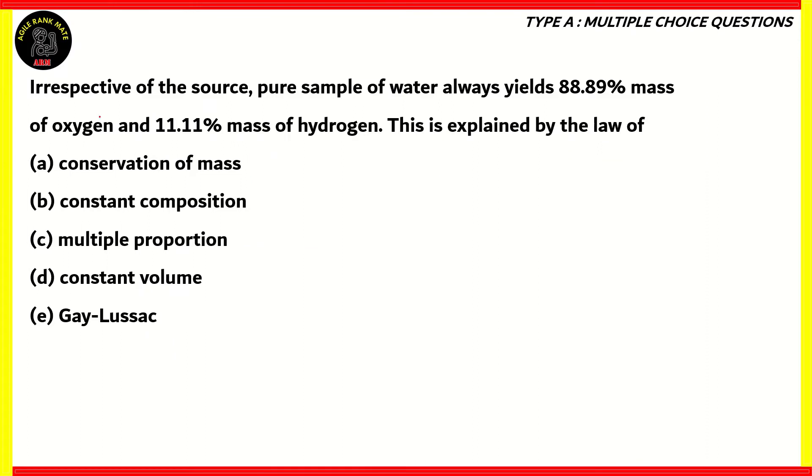Now, let's look at this question. Irrespective of the source, a pure sample of water always yields 88.89% mass of oxygen and 11.11% mass of hydrogen. This is explained by the law of: (a) conservation of mass, (b) constant composition, (c) multiple proportion, (d) constant volume, (e) Gay-Lussac.